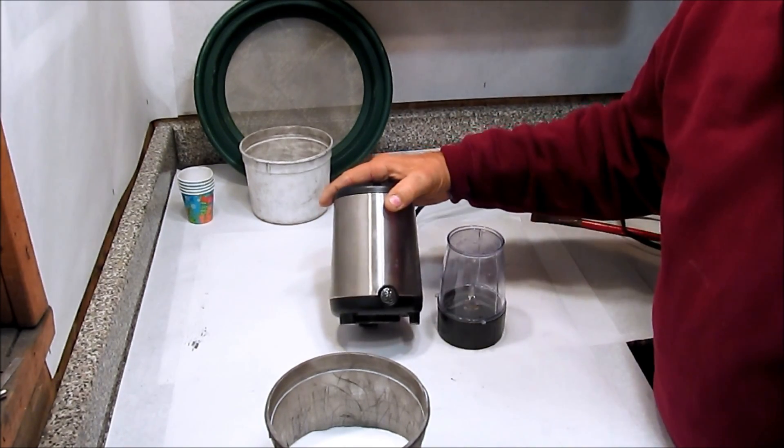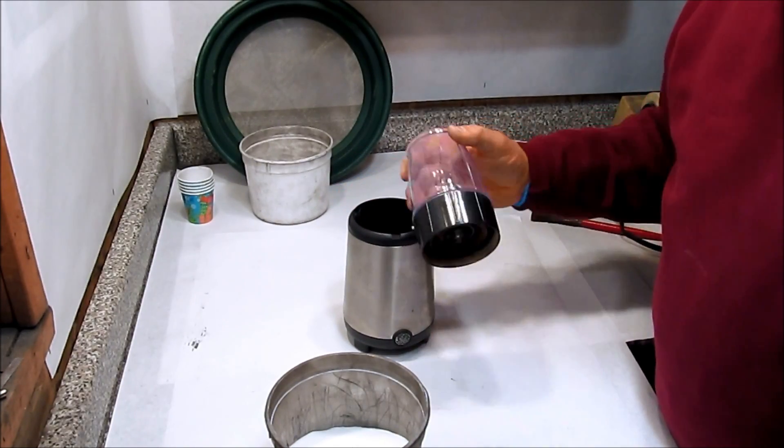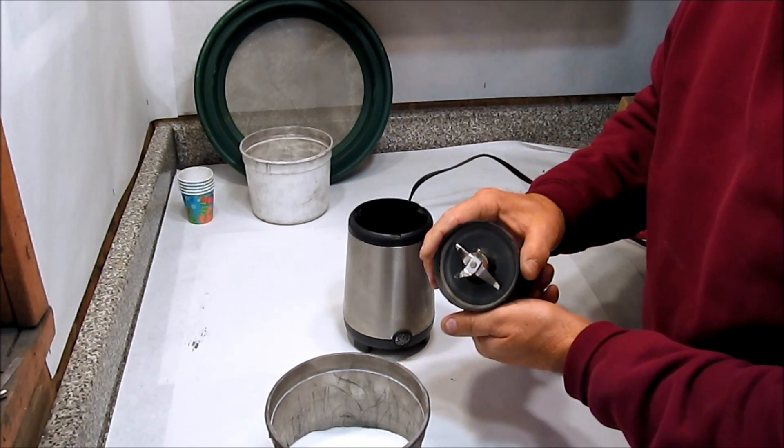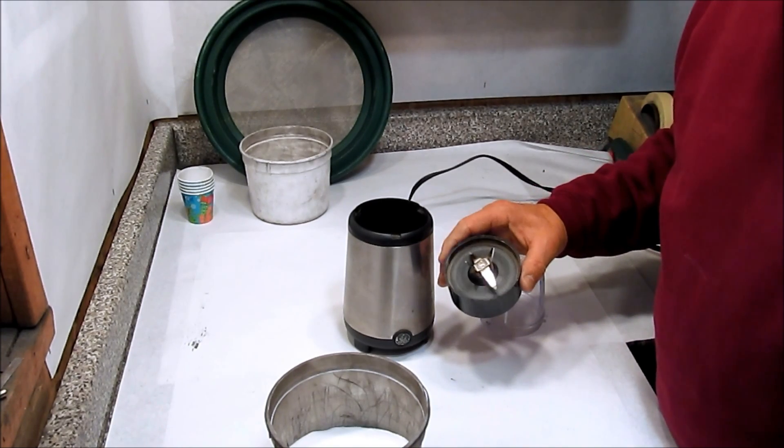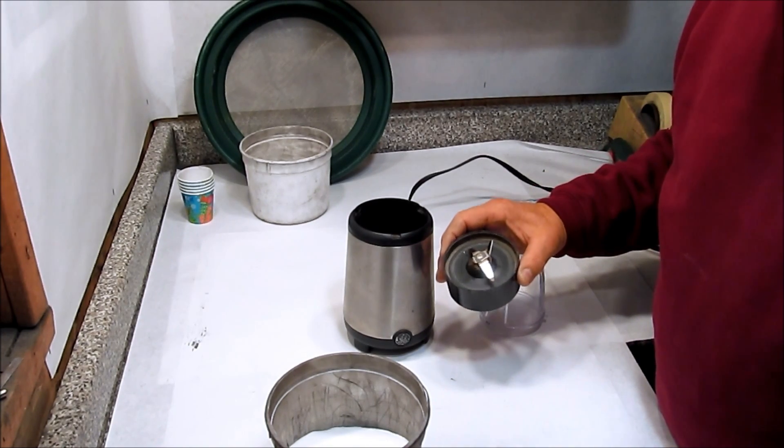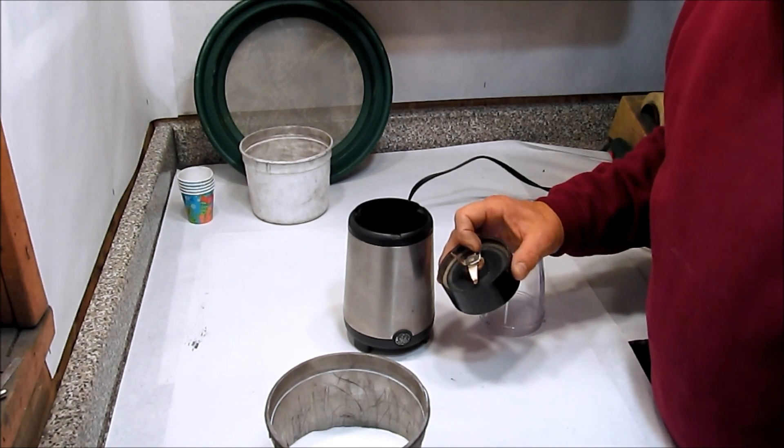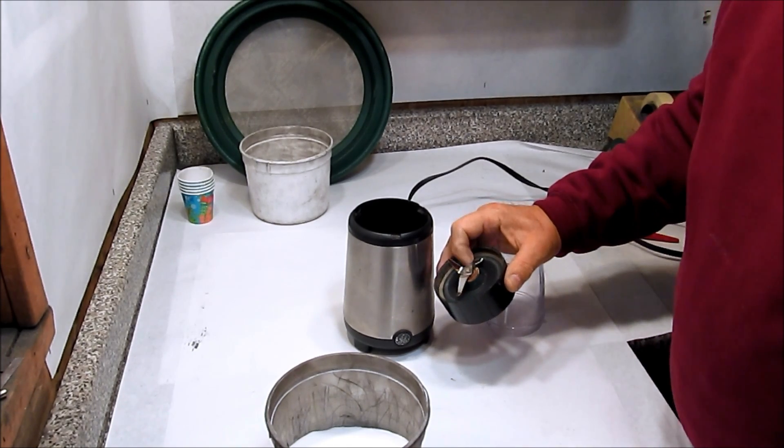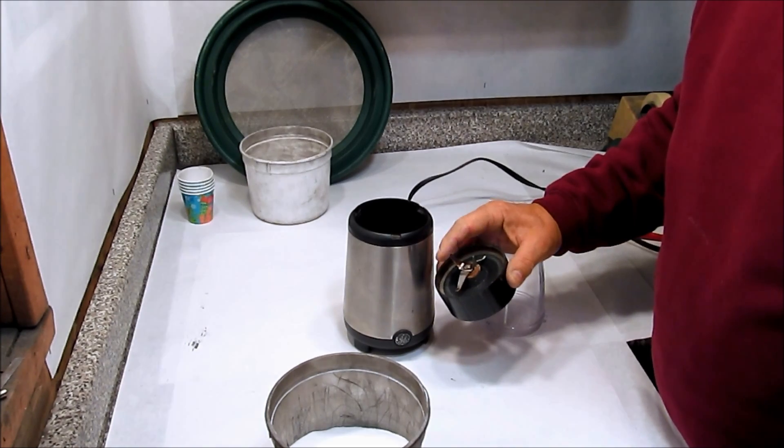This is a GE Rocket Blender, single serving blender. It comes with a base that has the four blades in it. It's available at Walmart and various other places. If you Google single serving blender, rocket blender, some other versions of this are the Ninja blender and some of the other single serving blenders that you can find on the shelves at the kitchenware aisle of a place like Walmart.